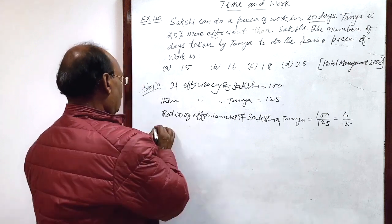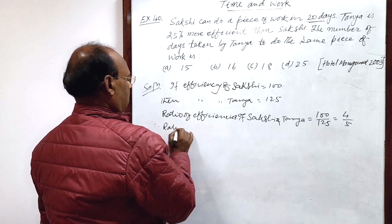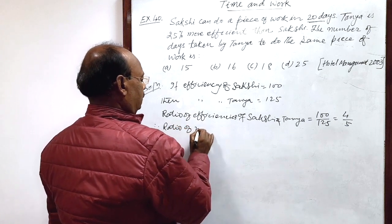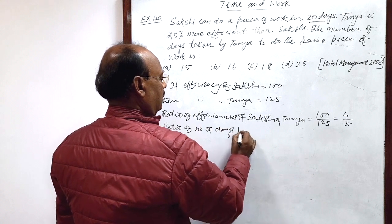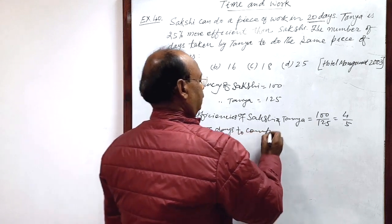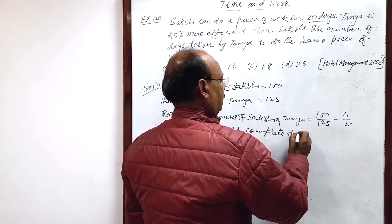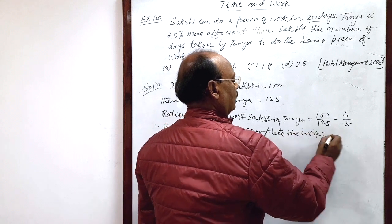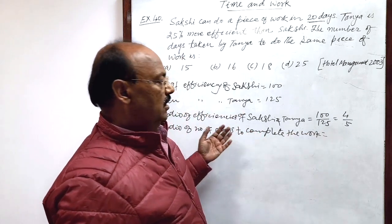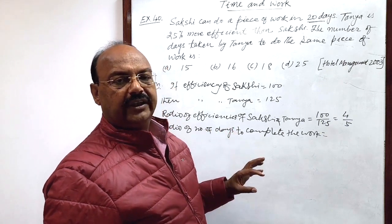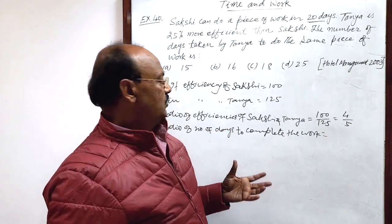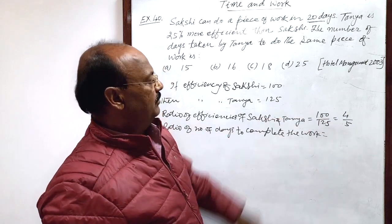So, ratio of number of days to complete the job, to complete the work will be as we discussed, efficiency and number of days are inversely proportional. So if this is 4 by 5,